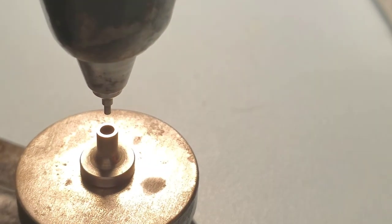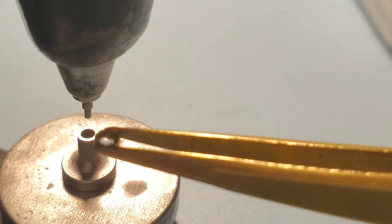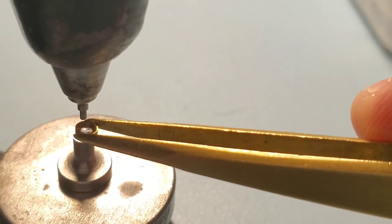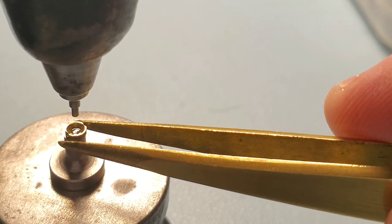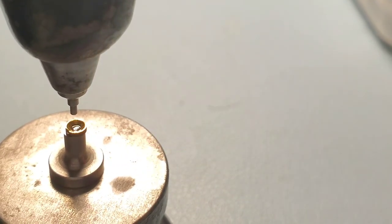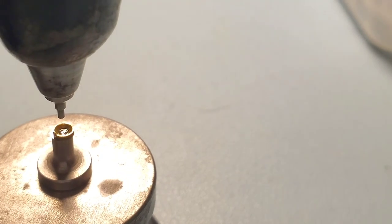I'm first going to punch out that jewel. Now this is a jeweler's press. And I set that on top of that bottom stub and punch it out with a conical punch that's smaller than the inner diameter of the chaton.